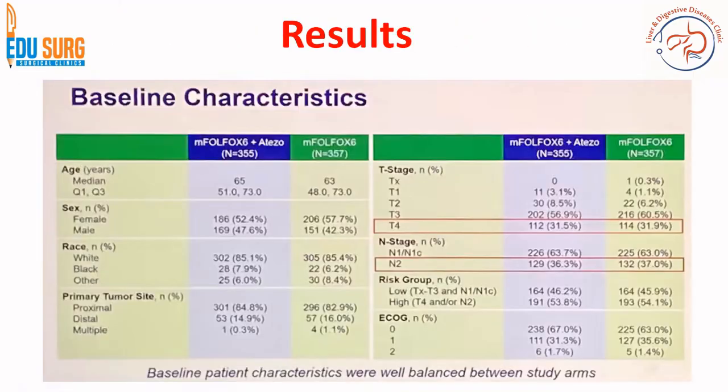Looking at baseline characteristics after randomization, the characteristics are well balanced between the two study arms. Parameters such as T4 disease — 112 versus 114 — and high-risk N2 disease — 129 versus 132 — are well balanced, confirming that high-risk and low-risk groups are evenly distributed between the arms.